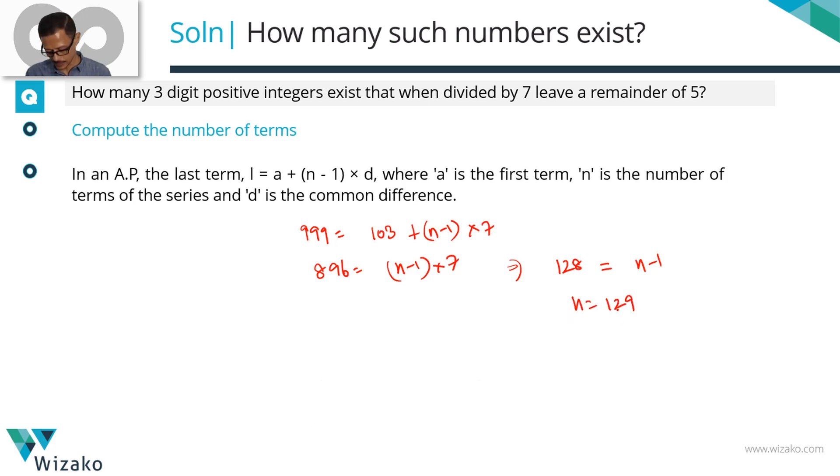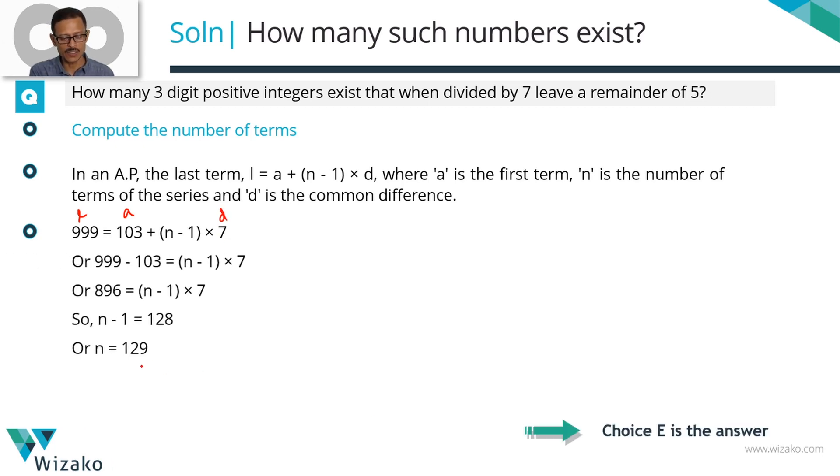Let's summarize this in printed form. We have plugged in the values: last term equals 999, first term is 103, and the common difference equals 7. So one equation, one variable, solving for n we get n equals 129. Choice E is the correct answer to the question.